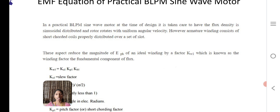However, armature winding consists of short chorded coils properly distributed over a set of slots. These aspects reduce the magnitude of EMF phase of an ideal winding by the factor Kw1 which is known as winding factor, the fundamental component of flux. The flux depends on the winding factor.